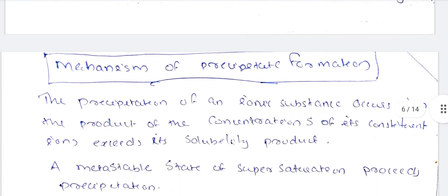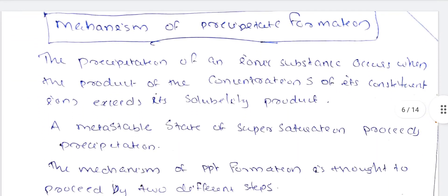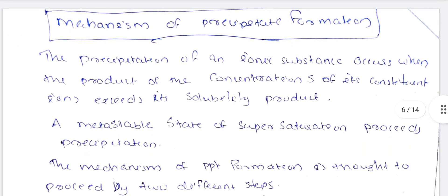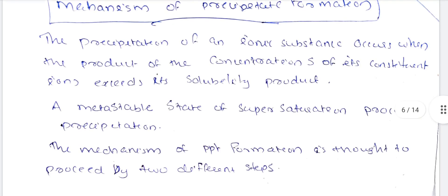Next, the mechanism of precipitate formation. The precipitation of an ionic substance occurs when the product of concentrations of its constituent ions exceeds its solubility product.